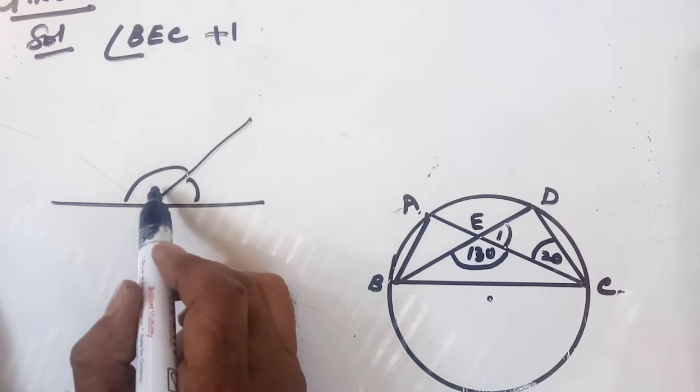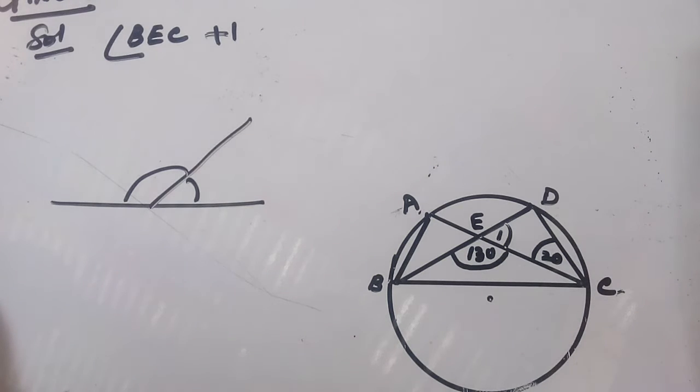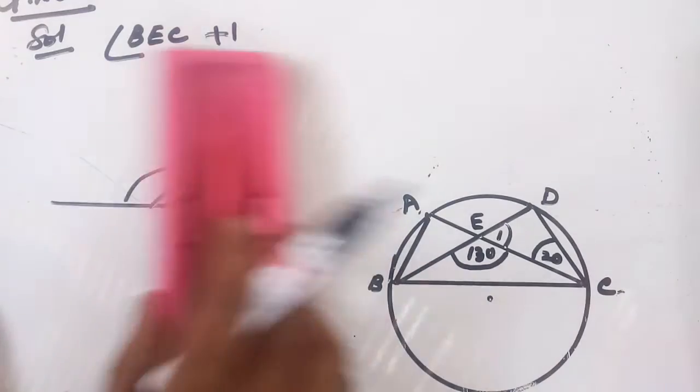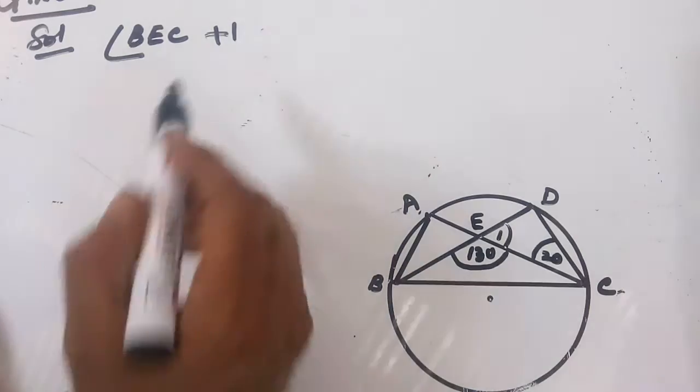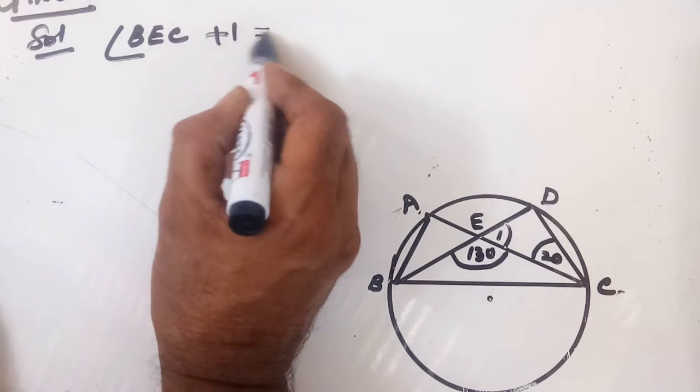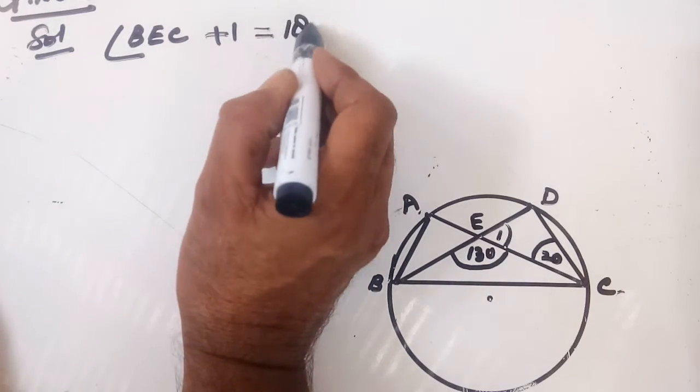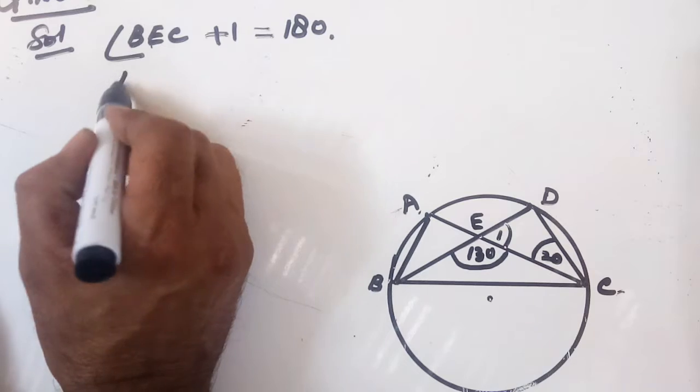Angle 1 is on line XC forming a linear pair. In a linear pair, the sum of angles is 180 degrees.